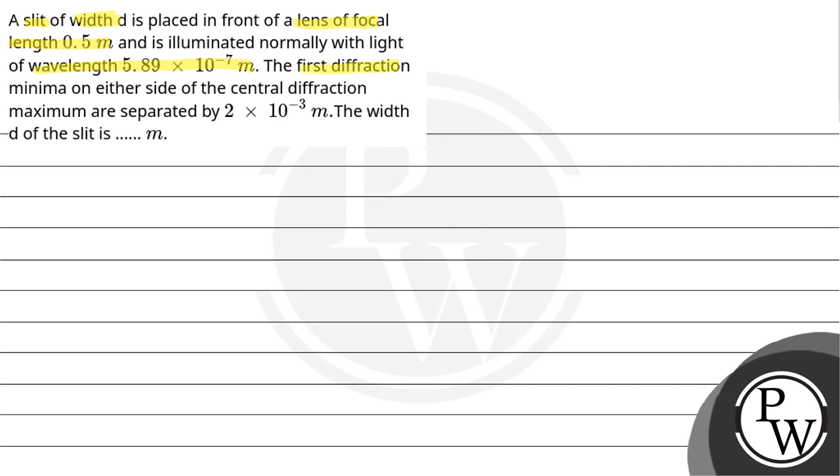The first diffraction minima on either side of the central diffraction maxima are separated by 2 × 10^-3 meter. The width D of the slit is what we need to find.